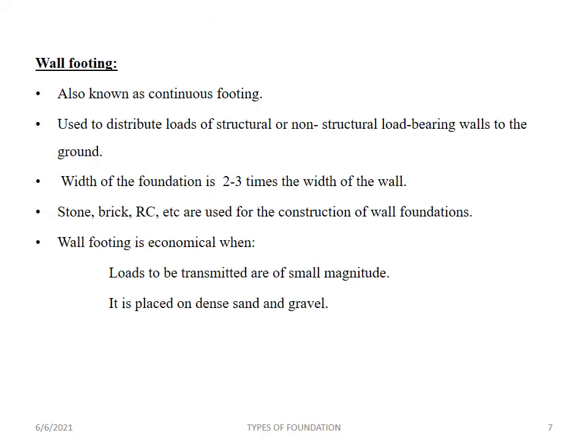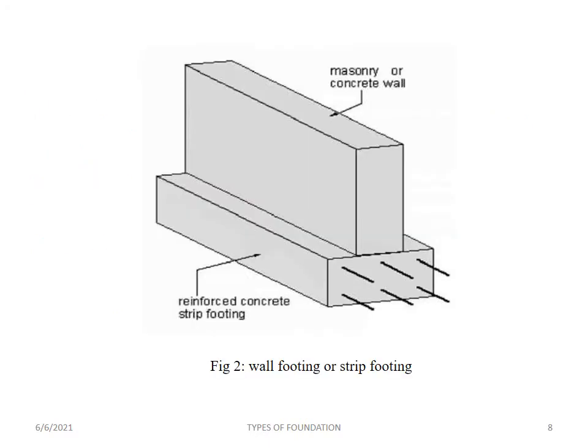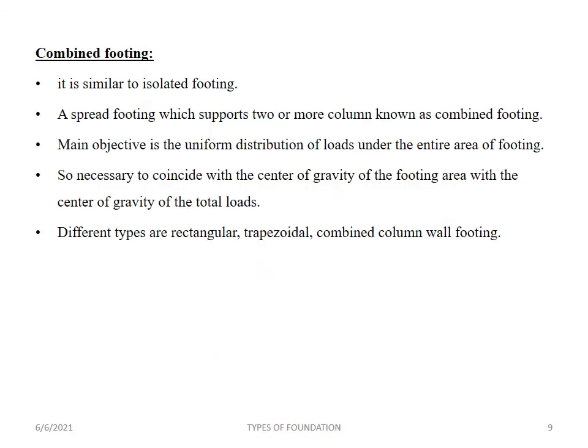The next type is wall footing, also known as continuous footing. By providing wall footing, the load from structural or non-structural load-bearing walls is distributed to the ground. The width of the foundation is 2 or 3 times greater than the width of the wall. Materials used for wall foundation construction are stone, brick, and RC members. Wall footing is economical when loads transmitted are of small magnitude and it is placed on dense sand or gravel.